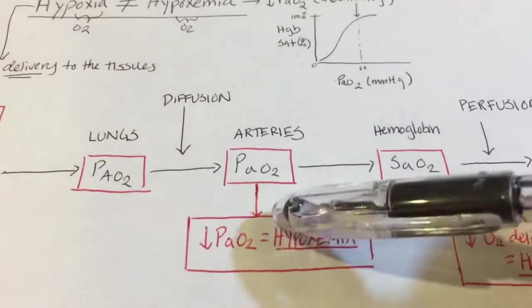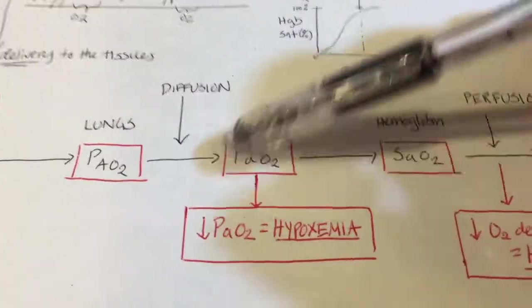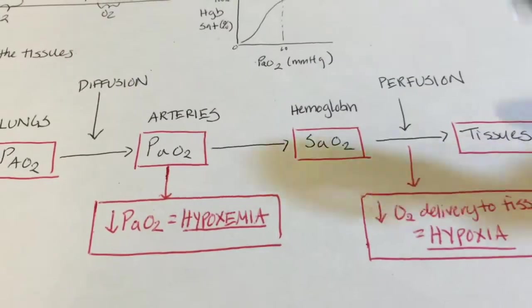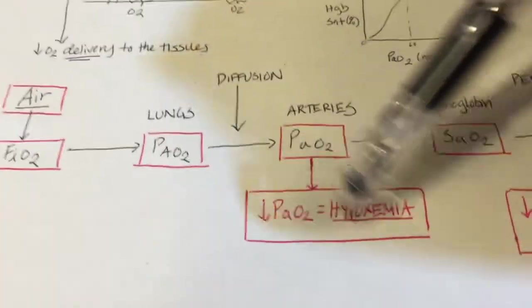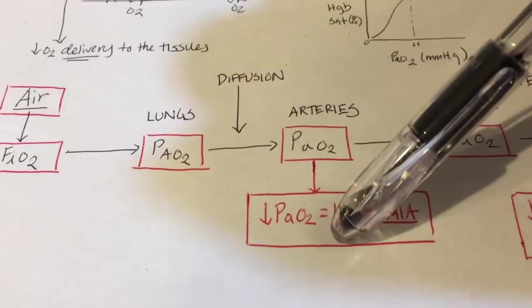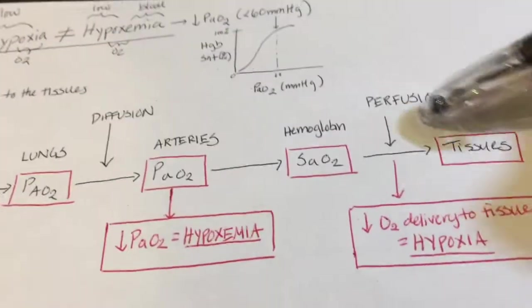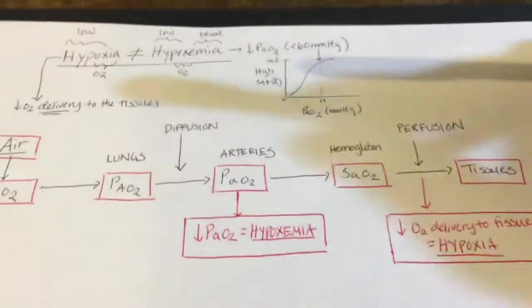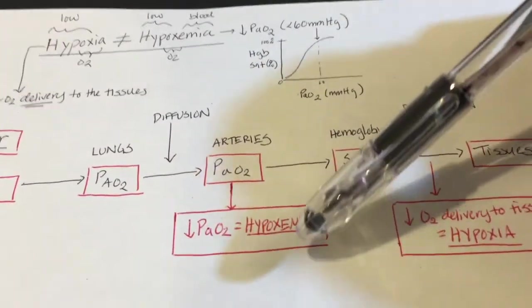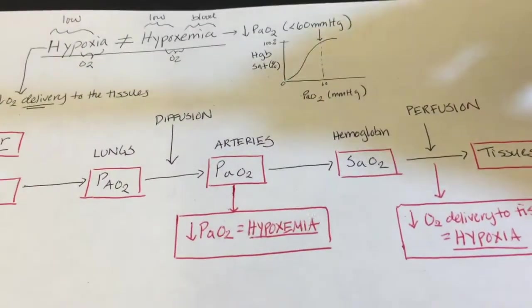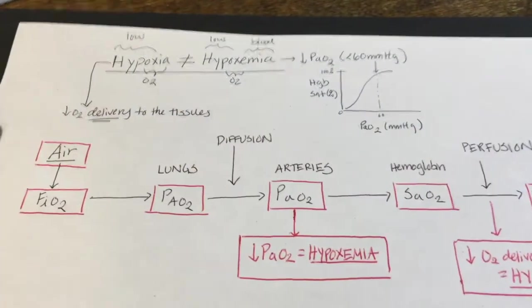For hypoxemia, the problem is low partial pressure of oxygen within the arteries. For hypoxia, it's decreased delivery to the tissues. Anything going wrong from inspired air all the way up to the arterial partial pressure will cause hypoxemia. Anything going wrong past that point causes hypoxia. Importantly, causes of hypoxemia will also cause hypoxia, but causes of hypoxia don't necessarily cause hypoxemia.